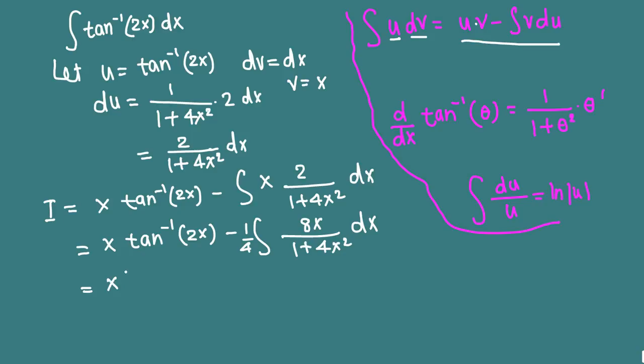Then we can write the final answer in the next line: x tangent inverse 2x minus one fourth. Since the top is derivative of bottom, the integral is natural log of bottom, absolute value of bottom. But 1 plus 4x squared is always positive, x squared positive always, times 4 is always positive, plus 1, so we don't need absolute value. We can just write 1 plus 4x squared, and plus C integration constant. Final answer.